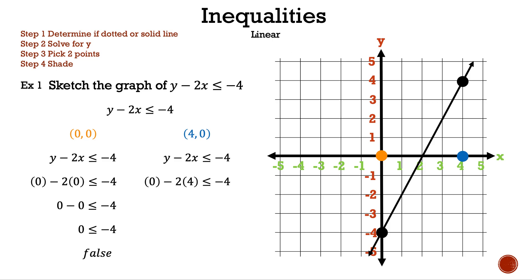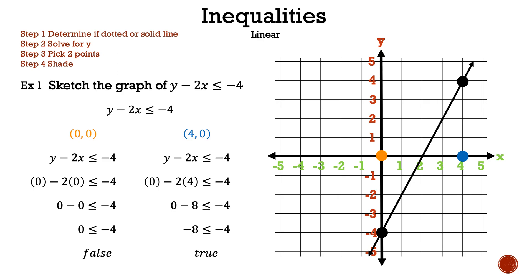Now let's substitute (4, 0) into the inequality: 0 minus 2 times 4 less than or equal to negative 4. And 2 times 4 is 8, and 0 minus 8 is negative 8. So we have negative 8 less than or equal to negative 4. That is true. Since (4, 0) is true, we need to shade that section of the graph to tell us that any point in that section makes the inequality true.